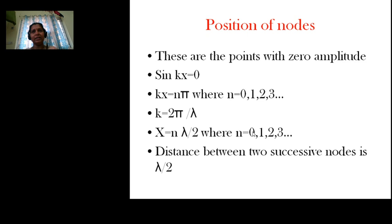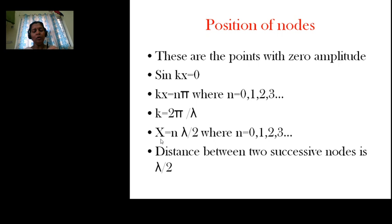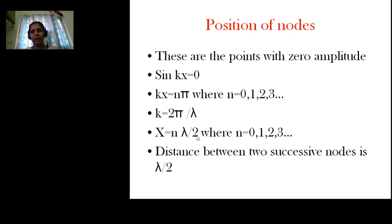The distance between two successive nodes is λ/2. At n = 0 (fixed end) we have a node, and for n = 1, the next node is at x = λ/2. So the distance between two consecutive nodes is λ/2.